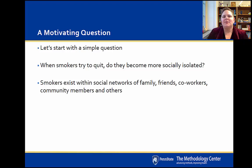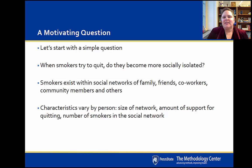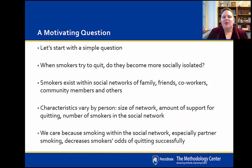We know that smokers exist within a social network that includes family, friends, co-workers, community members, and many others, but the characteristics of those networks vary from person to person. For example, one person might have a small network, another might have a large network. Within someone's network, the amount of support for quitting might be high or low. The person might be embedded in a network with many smokers or fewer smokers. We know from previous research that depending on who comprises your network, you might have greater or lesser support for quitting.